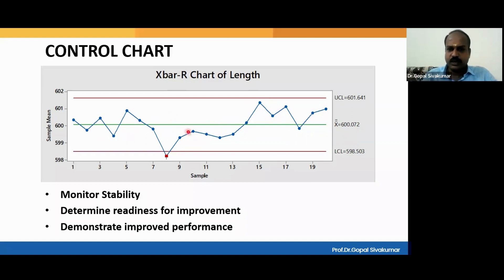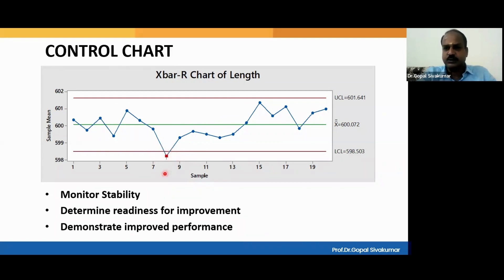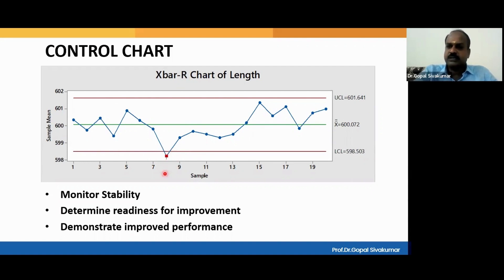Based on the way the points are distributed, we detect whether the process is under control, whether the process is stable, or whether the process is out of control. In this particular graph, when we look at the eighth sample, the eighth subgroup average is going below the lower control limit. So this process should be considered as a statistically out of control process — that means your results are unstable, and under such a situation, predictability becomes a problem.